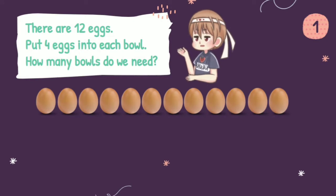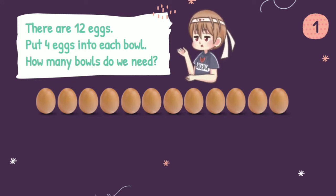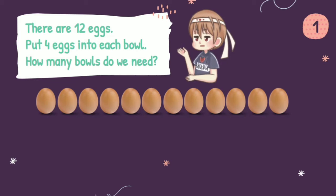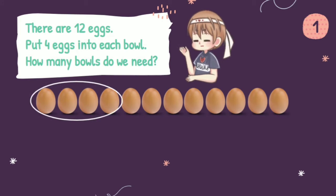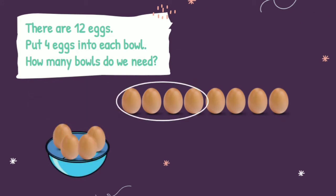There are 12 eggs. Put 4 eggs into each bowl. How many bowls do we need? Here we have to find how many bowls we need. As you can see, we have 12 eggs here and the instruction is to put 4 eggs into each bowl. So the first thing we have to do is take 4 eggs and put them into the first bowl like this.